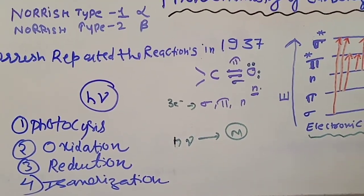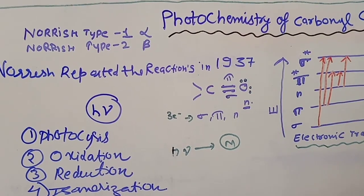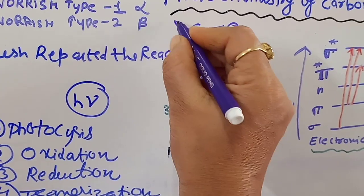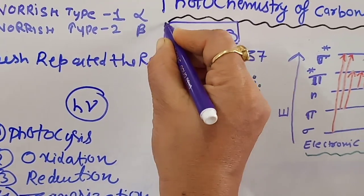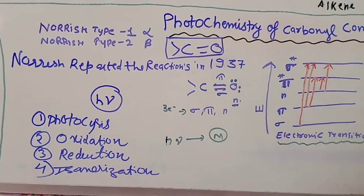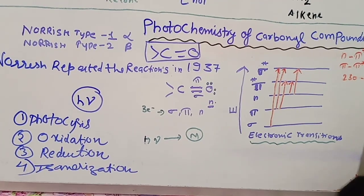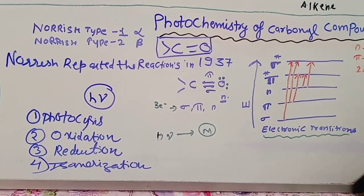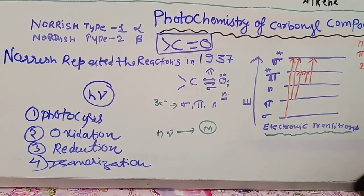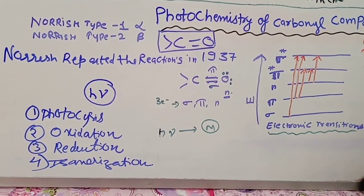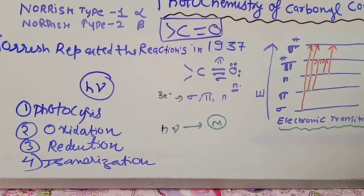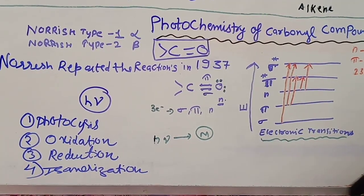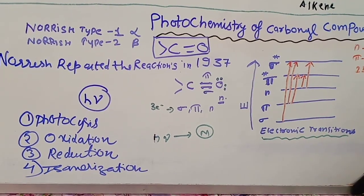The main functional group for the carbonyl is C double bond O. The reactions in carbonyl compounds are basically studied under two headings: Norrish type 1 and Norrish type 2. Norrish reported these reactions in the year 1937, and we will see the details of both in this video.